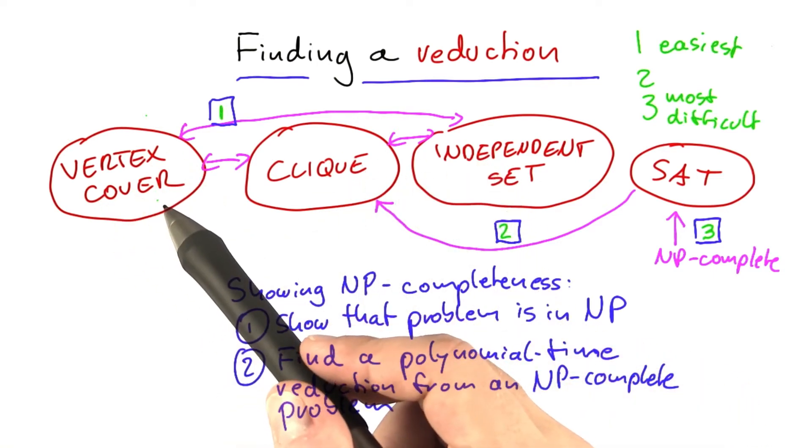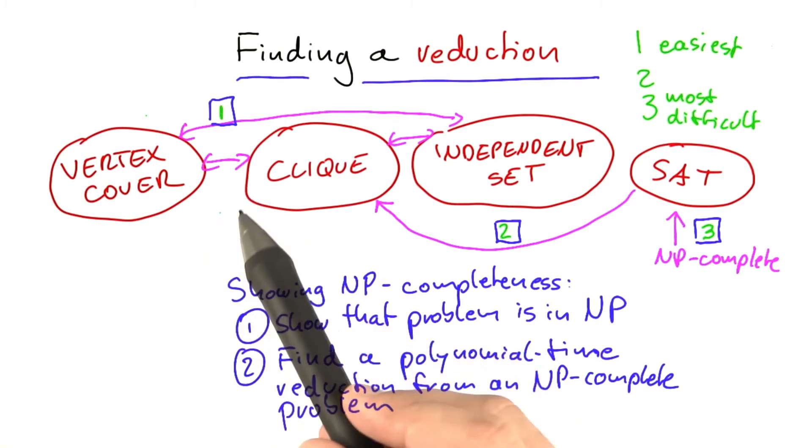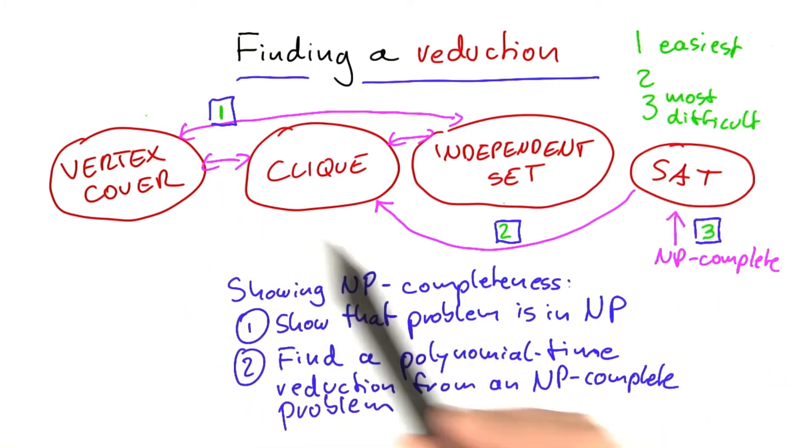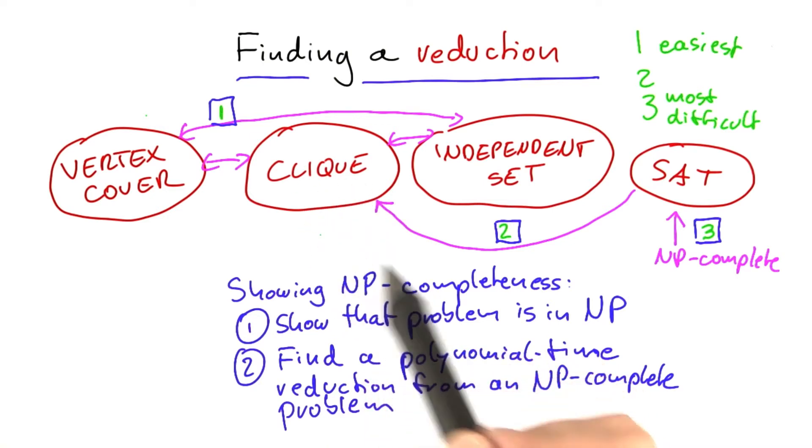Vertex cover, yeah, we had to give it a little thought. But I still think it was much easier than coming up with the idea of how to encode a boolean formula into a graph that is then an input for CLIQUE.